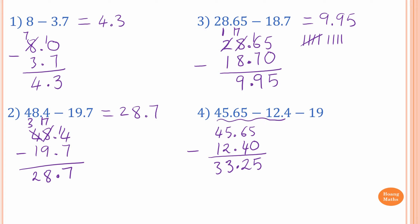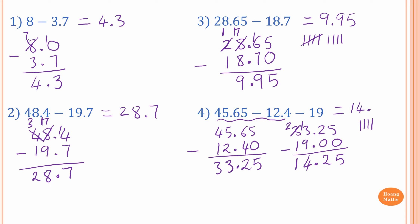Then that minus 19. So I write 33.25 minus 19. Make sure the place value is correct — 19 is exactly the same as 19.00. 5 take away 0 is 5, 2 take away 0 is 2, dot. 3 cannot take away 9, so borrow 1 from 3 — this becomes 2, and 3 becomes 13. 13 take away 9: 10 take away 9 is 1 and 3 is 4. Then 2 take away 1 is 1. So the answer is 14.25.